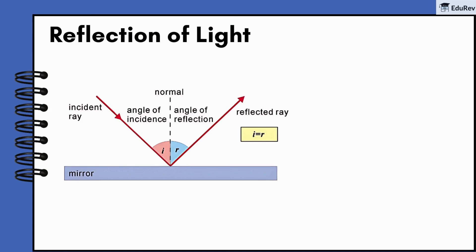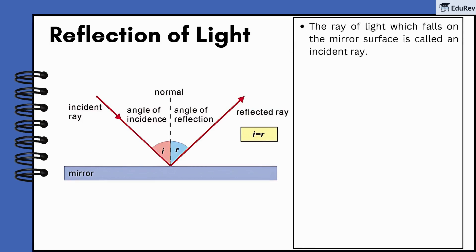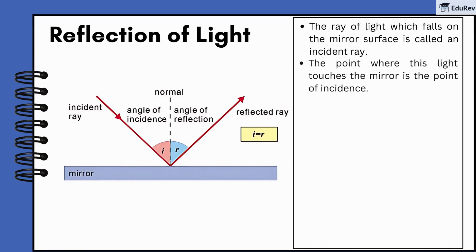Now, let's learn more about reflection of light. When light hits a mirror, some interesting things happen. The ray of light that falls on the mirror is called an incident ray. The point where this light touches the mirror is called the point of incidence.